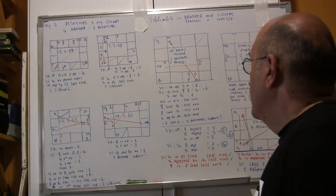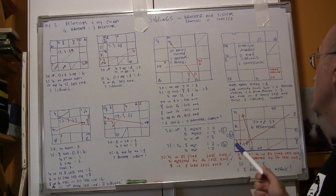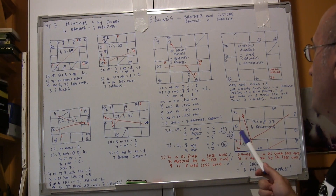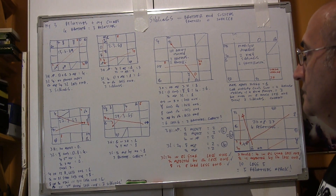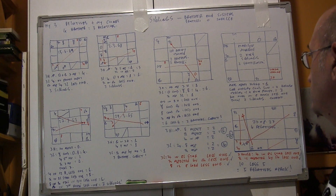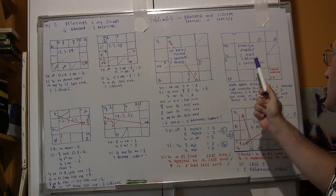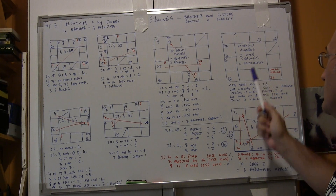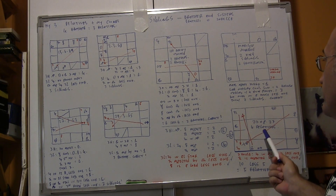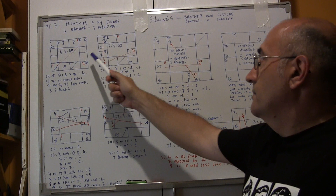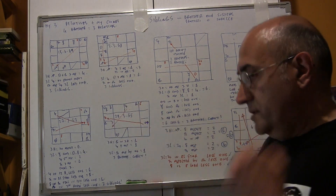Here I am presenting seven charts. One chart is Lee Harvey Oswald, Marilyn Monroe, my father, my child, and my brothers.